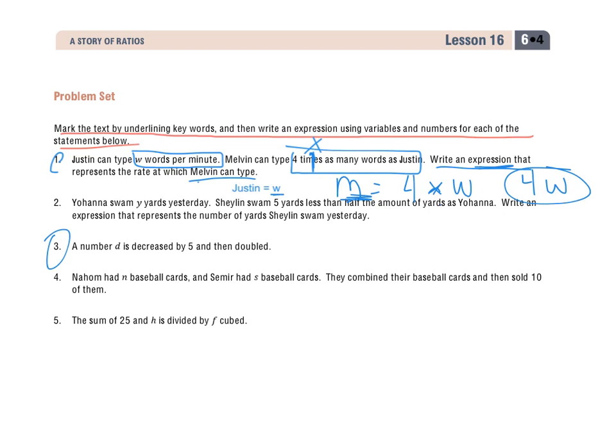Now, let's take a look at three. I got a number D is decreased, which means subtraction, by five, and then doubled. So, a number D is decreased by five and then doubled. So, I know that I have to do this first before I double it, or times two. Now, because it says, and then, it's telling me that this has to take place first, all of this, and then I can multiply it by two or double it.